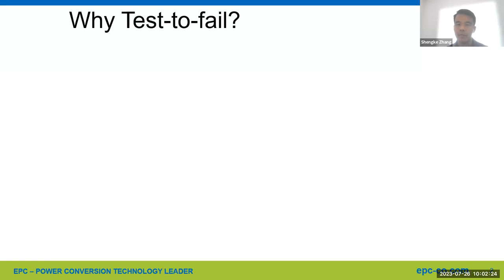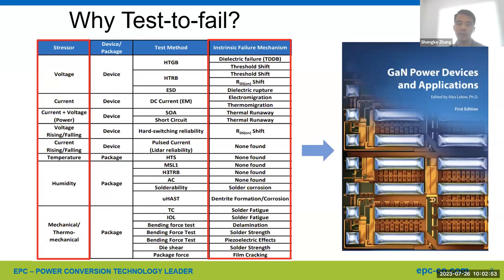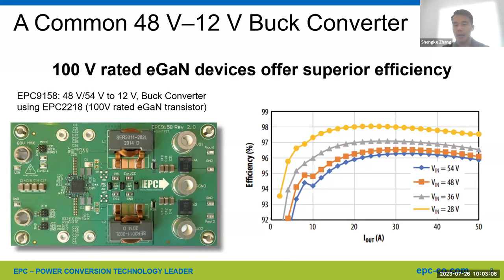Why test-to-fail? Standard qualification typically produces zero failures out of a large group of parts tested. Therefore, it's quite challenging to apply the test results to a specific application that has a unique mission profile. That is why we need test-to-fail, followed up with failure analysis to understand the underlying failure mechanisms. Here is a list of stressors and the corresponding intrinsic wearout mechanisms.